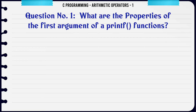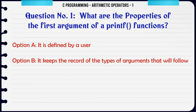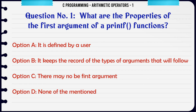What are the properties of the first argument of a printf function? a. It is defined by a user. b. It keeps the record of the types of arguments that will follow. c. There may be no first argument. d. None of the mentioned.